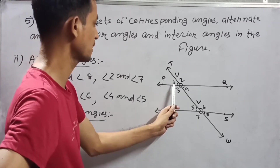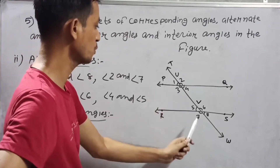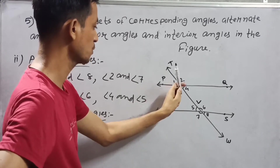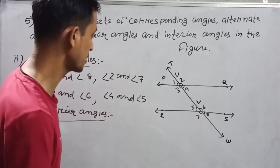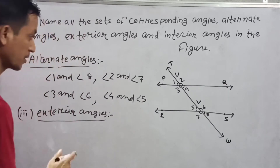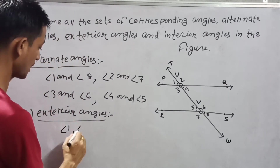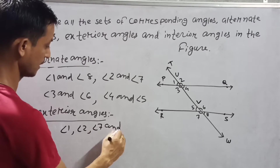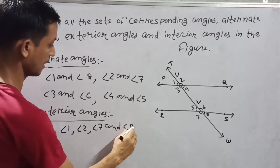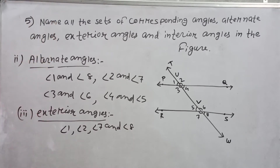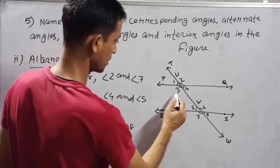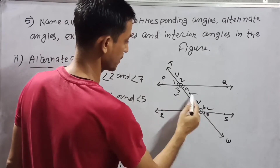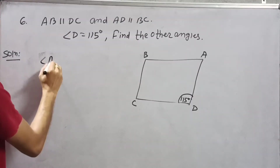Exterior angles are the outside angles: 1, 2, 7, and 8. So exterior angles are angle 1, angle 2, angle 7, and angle 8. Interior angles are 3, 4, 5, and 6.